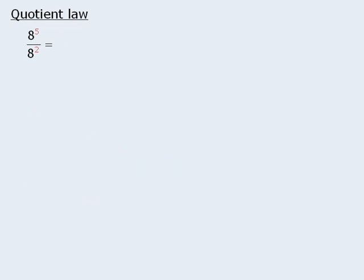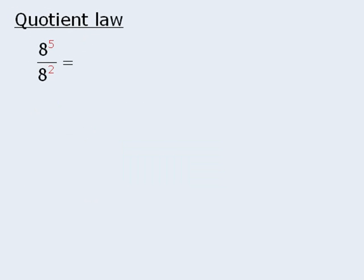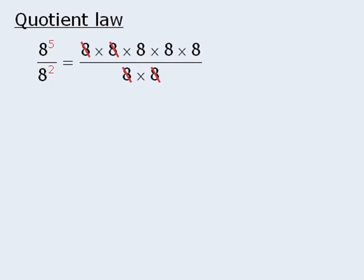The next law is called the quotient law. Once again, we will set up this law with an example. Let's begin by rewriting the numerator, and then rewriting the denominator. At this point, we can eliminate 2 eighths from the top and the bottom to get the product of 3 eighths, which is equal to 8 to the power of 3. So 8 to the power of 5 divided by 8 to the power of 2 is equal to 8 to the power of 3.